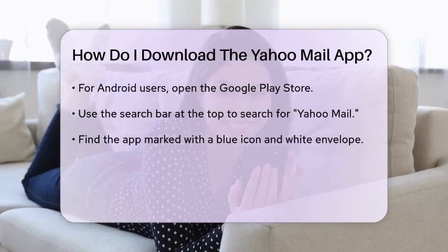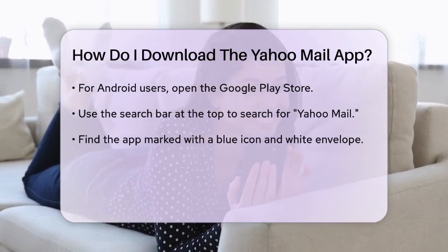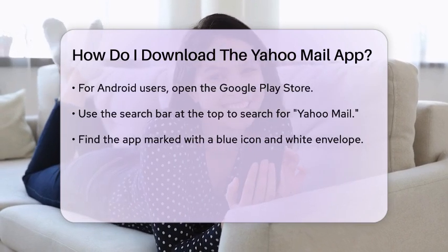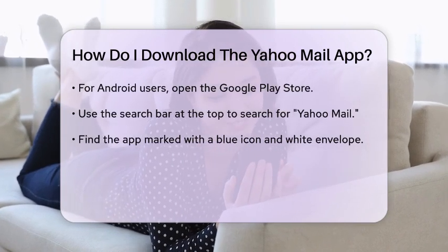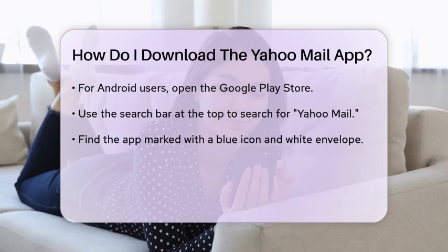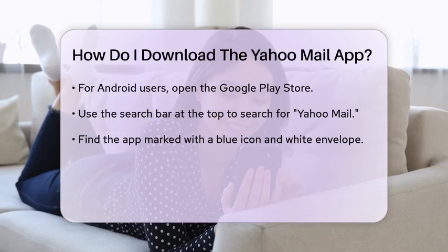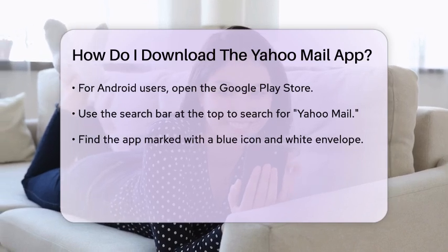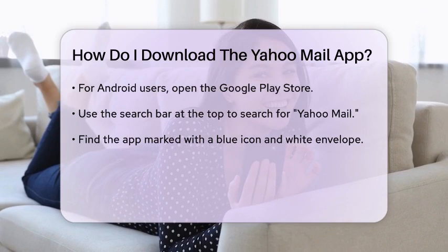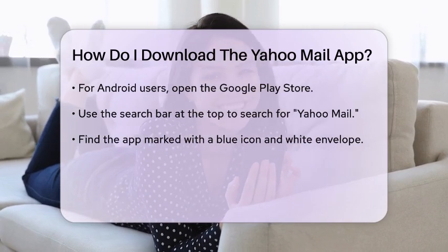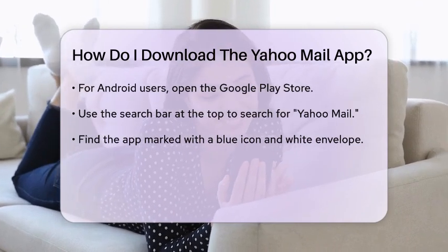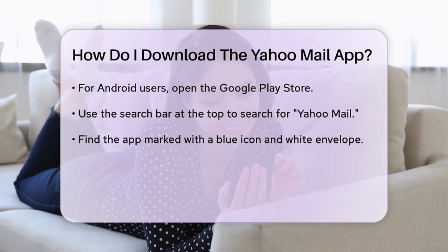For Android users, open the Google Play Store on your device. Similar to the App Store, you will find a search bar at the top of the screen. Type Yahoo Mail into the search bar and hit Enter. Look for the Yahoo Mail app in the search results, which is also marked by a blue icon with a white envelope. Tap on the app to open its details page.